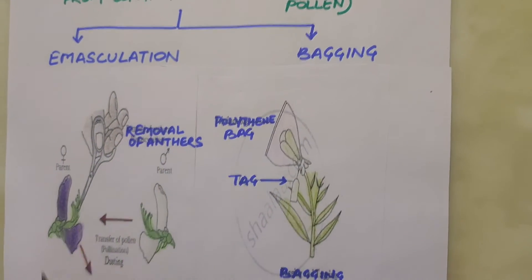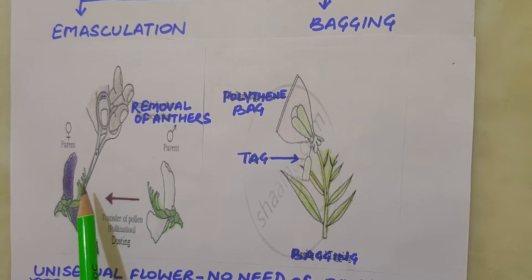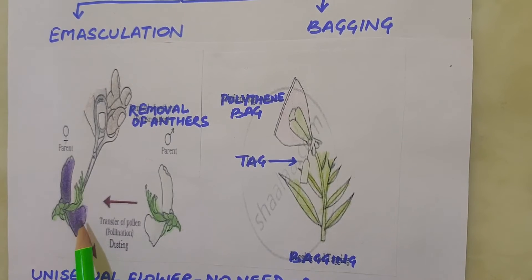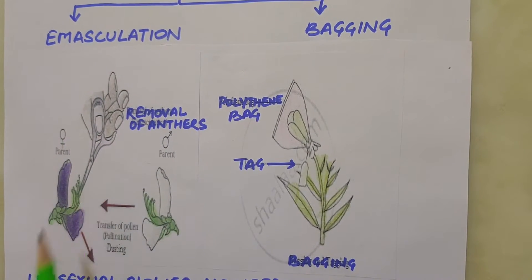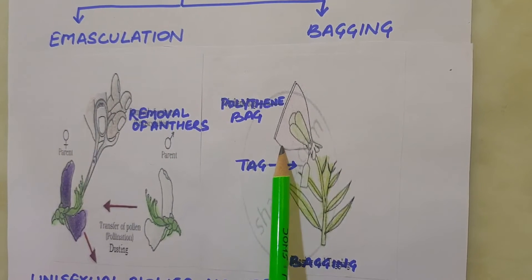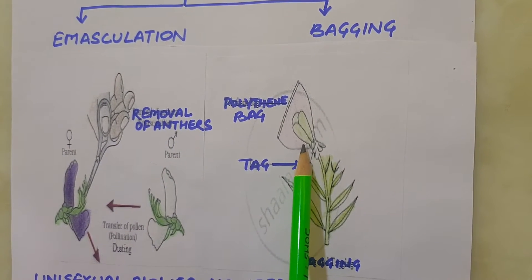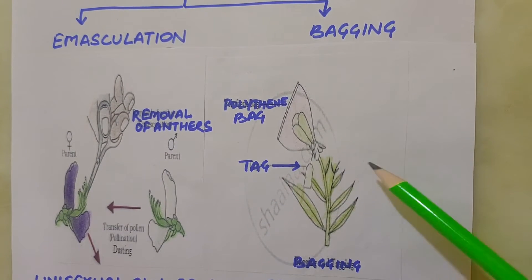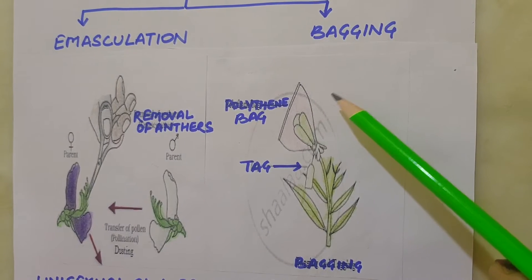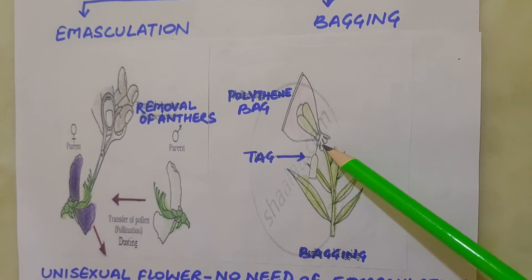Emasculation: if the female parent bears bisexual flowers, the removal of anthers from the flower bud before the anther dehisces, using a pair of forceps, is necessary — this step is referred to as emasculation. Emasculated flowers have to be covered with a bag of suitable size, generally made of butter paper, to prevent contamination of the stigma with unwanted pollen — this process is called bagging. When the stigma of the bagged flower attains receptivity, mature pollen grains collected from the anther of the male parent are dusted on the stigma, and the flowers are re-bagged and the fruits allowed to develop.